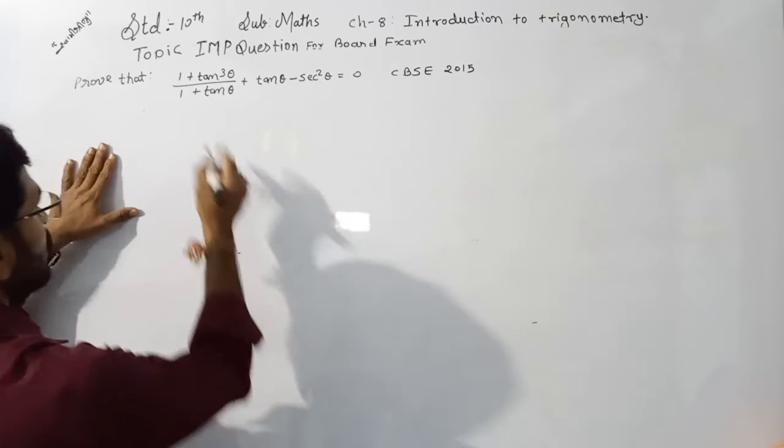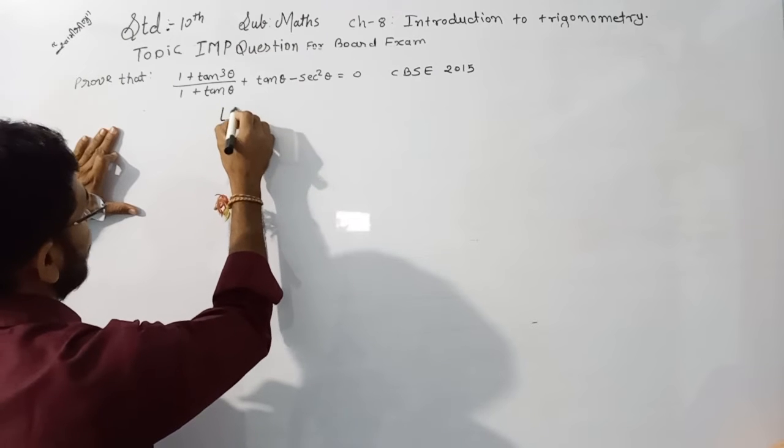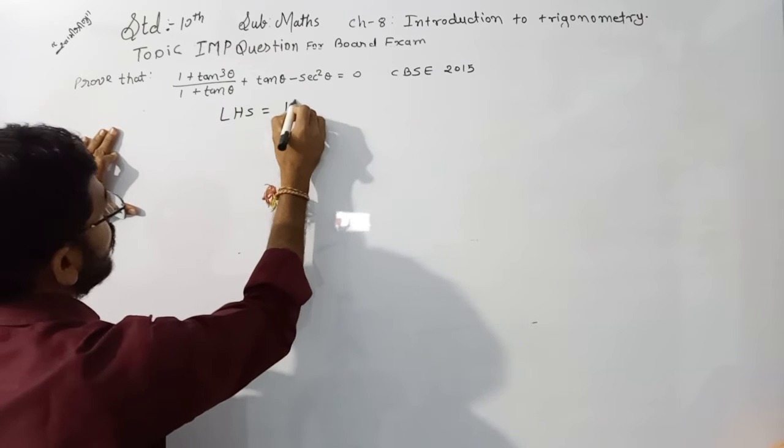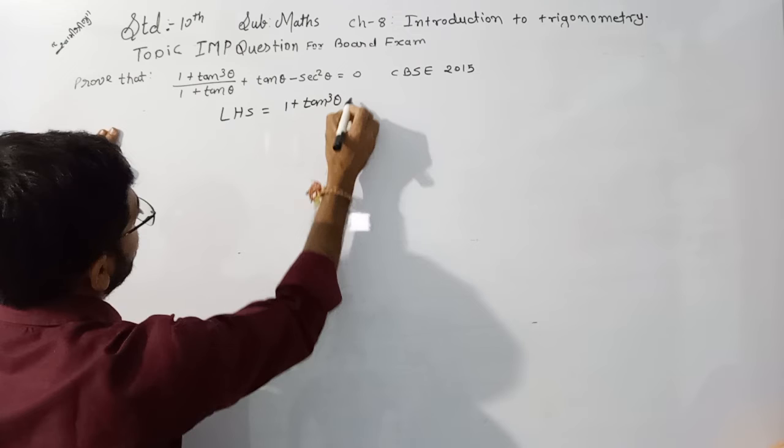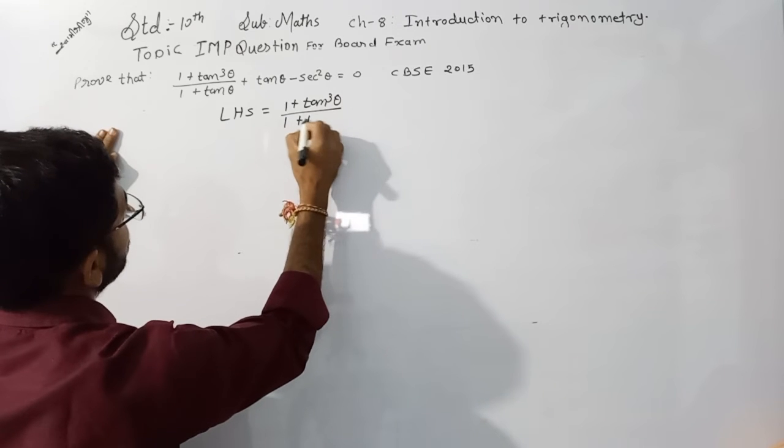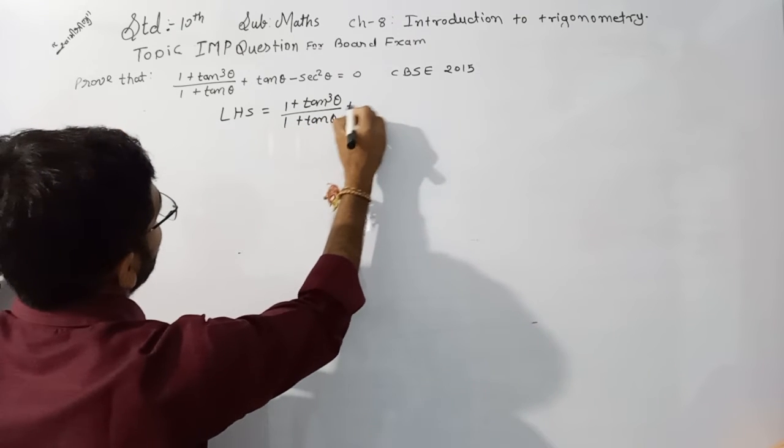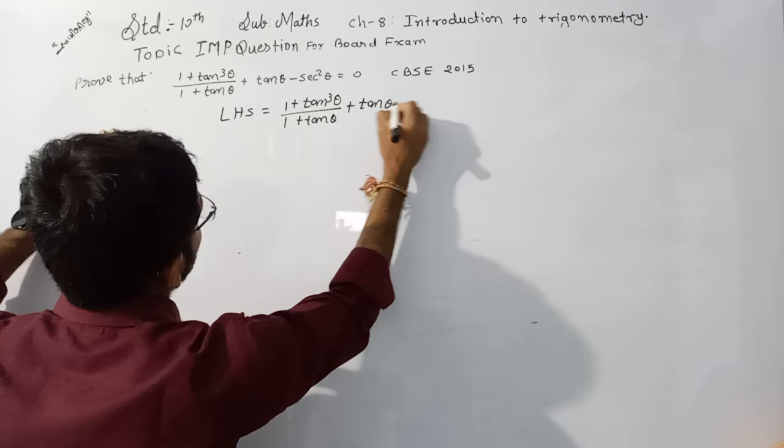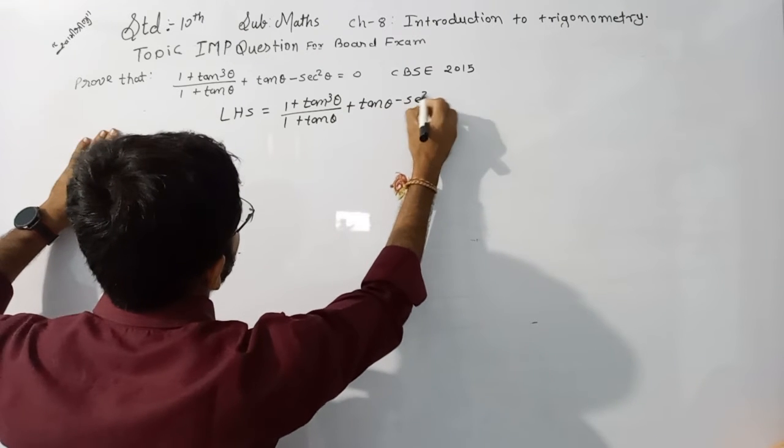Now we are looking for the solution. Left hand side is equal to (1 plus tan cube theta) upon (1 plus tan theta) plus tan theta minus sec square theta.